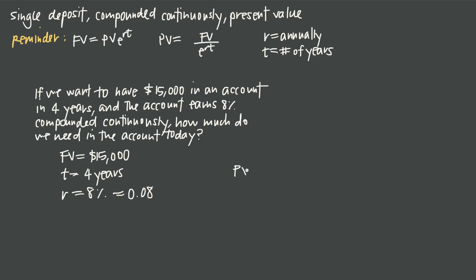So if we plug what we have into our present value formula we have $15,000 divided by e to the rt. The e always stays, and then we raise that to 0.08 times four years.